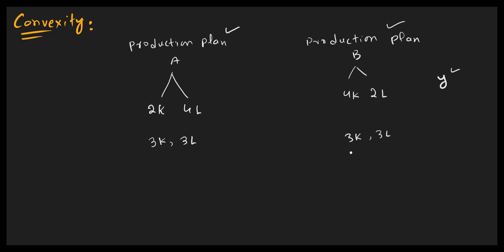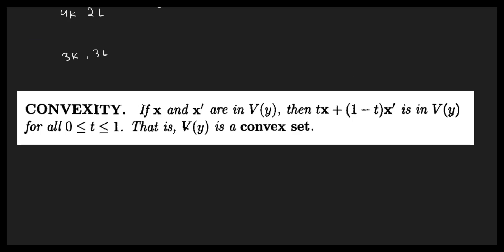To present convexity in standard language: if there are two input bundles x and x-prime, where x is the first vector of input bundles and x-prime is the second vector, and they are technologically feasible — that is, they are in the input requirement set — then their weighted average, t times x plus (1 minus t) times x-prime, is also in the input requirement set to produce y units of output.